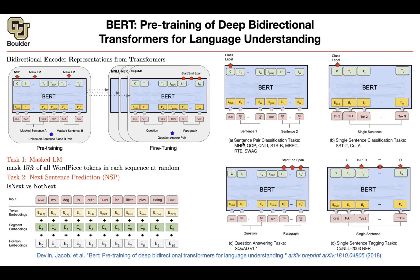Now you have your language model and you want to do downstream tasks — here you have labeled data. For instance, your labeled data could be pairs of sentences, like for natural language inference: is this sentence a logical consequence of the first sentence? That's a pair of sentence classification task. The CLS token's corresponding output is going to give you the class label. You're going to have a task-specific head here, fine-tuned with some parameters. You initialize that head randomly and learn it from scratch while fine-tuning the rest.